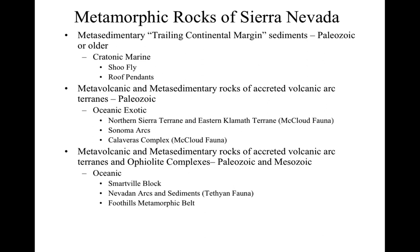Even though there is some overlapping age between the Tethian fauna and the McLeod fauna, the terrains are exotic — they just formed in different places. The fossils are distinctly different from one terrain to the other, which means they must have formed in different regions and were then brought here by plate tectonics.